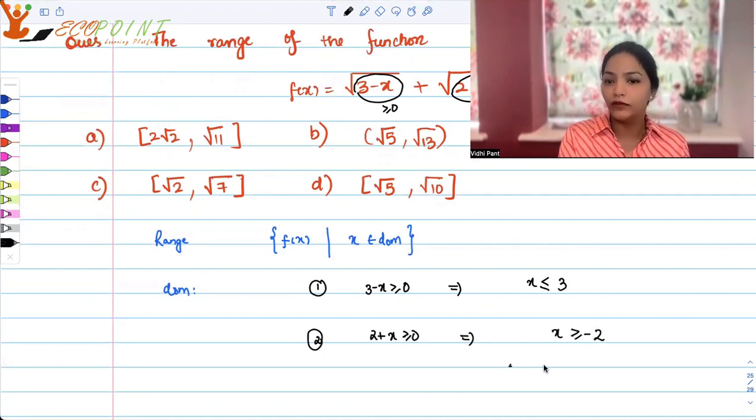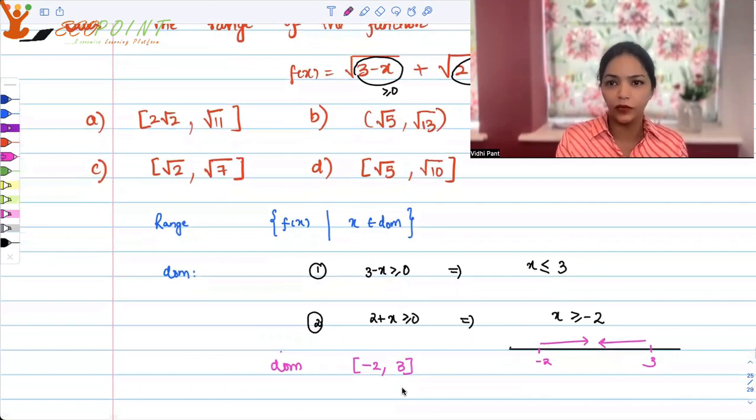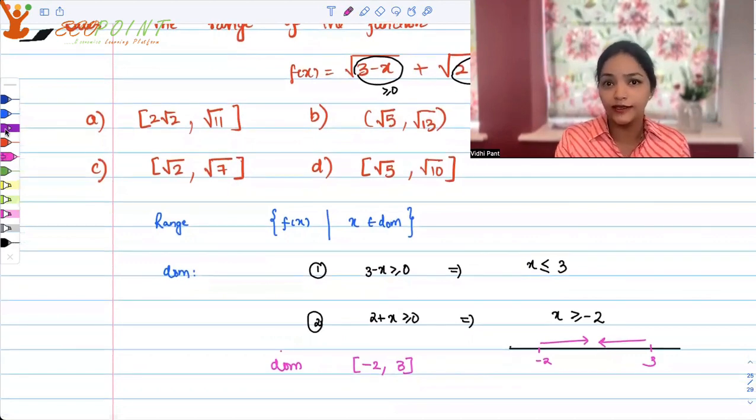If you see on the number line, if you try to understand what values can x take, this is minus 2, this is 3, more than minus 2 and less than 3. That means the x's that I can use: closed interval minus 2 to 3, because 0 as an input is fine. So this is my domain.